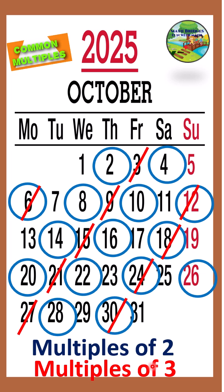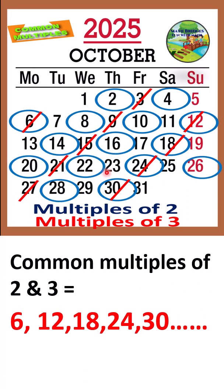Now from this, we will find out what are the common multiples of 2 and 3. The number which has been circled as well as crossed out will be the common multiple of 2 and 3. If you observe here, 6 has been circled and crossed out. So the first common multiple of 2 and 3 is 6.